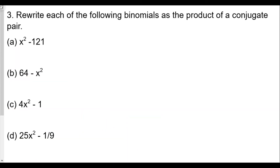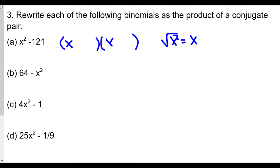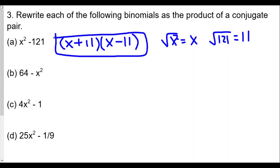Question 3: write each binomial as a product of a conjugate pair. A conjugate pair means two binomials with the same numbers but differing only in the sign between them. We find them by taking the square root of each term. For part (a), x² − 121: √(x²) = x and √121 = 11. The conjugate pair is (x + 11)(x − 11). The order of plus/minus doesn't matter here.